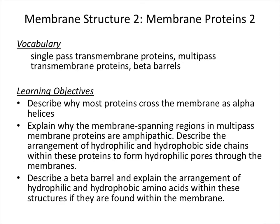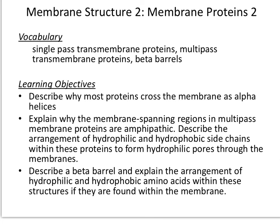Membrane structure, membrane proteins 2. This video is really going to focus on two core shapes of proteins: the alpha helix and the beta pleated sheet. In particular, how these two core aspects of secondary folding in proteins can lead to membrane protein localization.